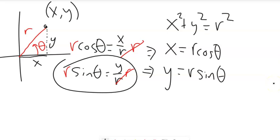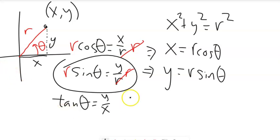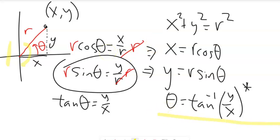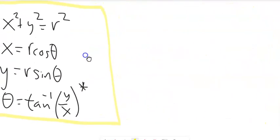Two more relationships: x² + y² = r², and theta = arctan(y/x). However, note that inverse tangent only gives values in the first and fourth quadrant. So if x is negative — meaning we're in the second or third quadrant — we have to add π to compensate. These four relationships are the key tools for converting back and forth between polar and rectangular formats.